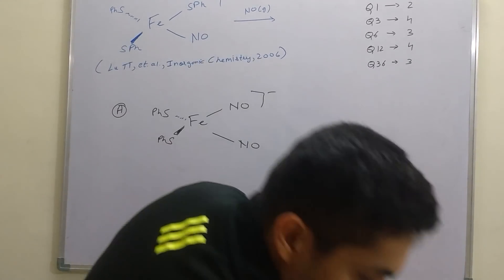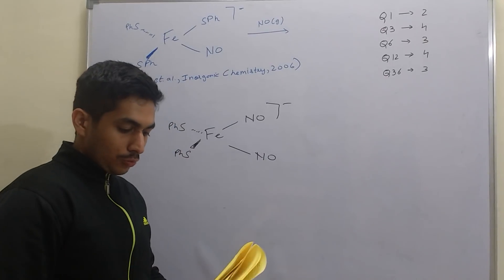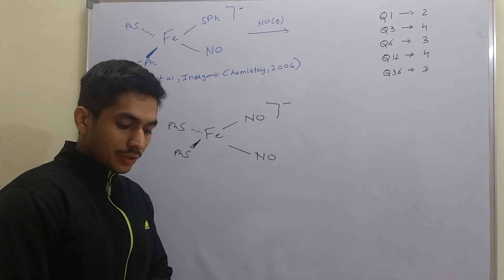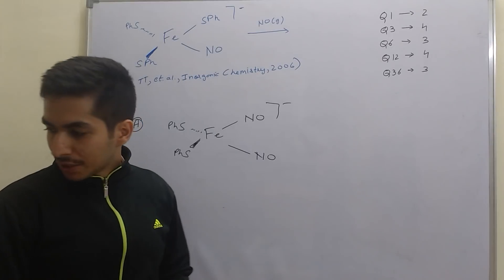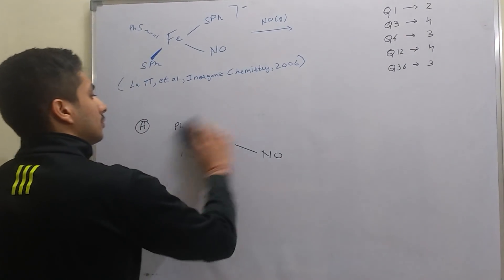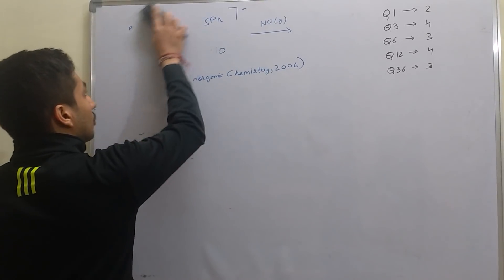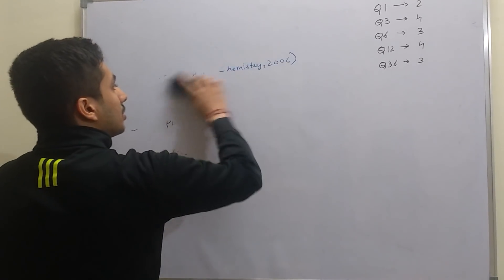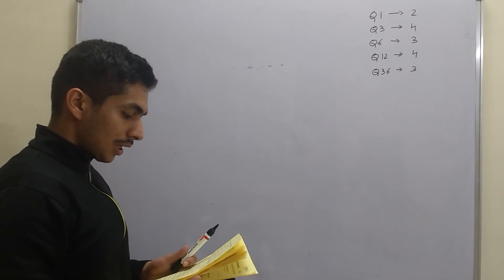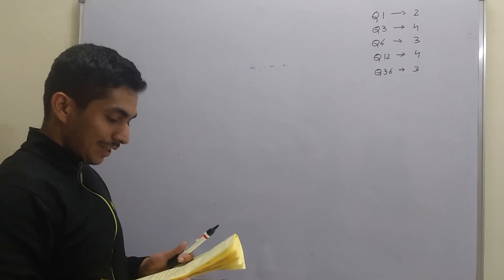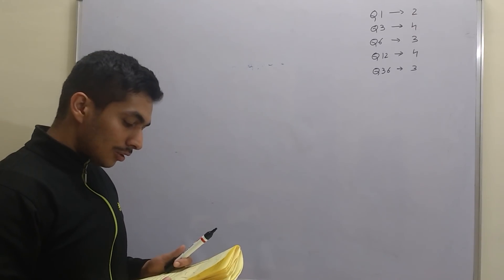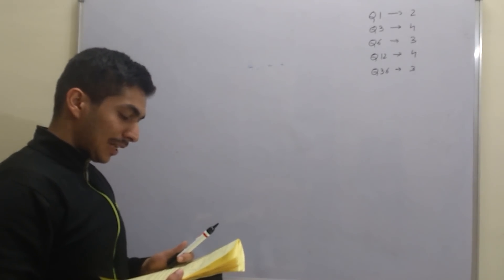Let me show you one more question. This was again an interesting question - you should know basic maths for this. This was question number 7, and it is a mathematical question. You have to find the volume of a parallelepiped.